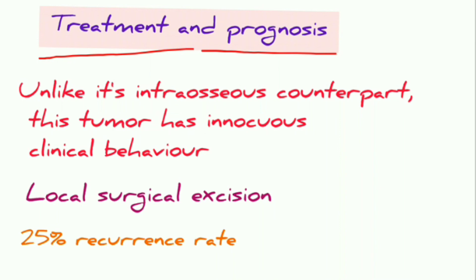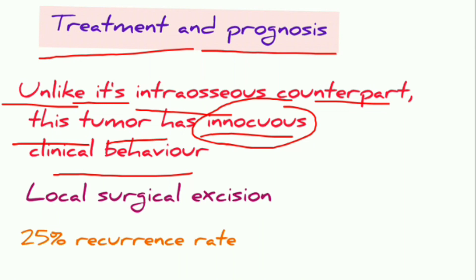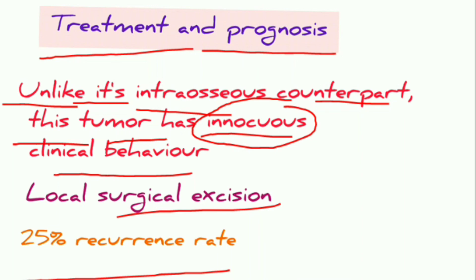Unlike its intra-osseous counterpart, peripheral ameloblastoma has innocuous (harmless) clinical behavior. Treatment is surgical excision with a 25% recurrence rate. Today we covered what ameloblastoma is, its different types, and the details of each type including multicystic, unicystic, and peripheral variants.